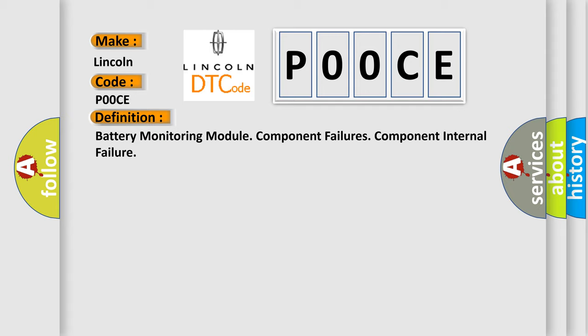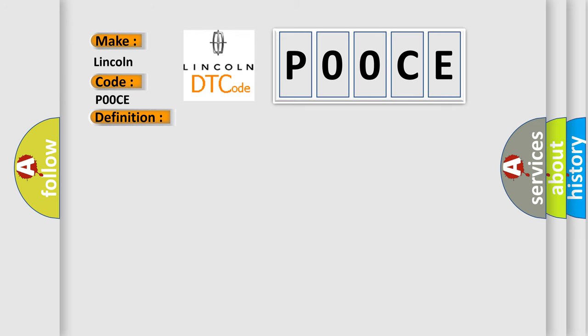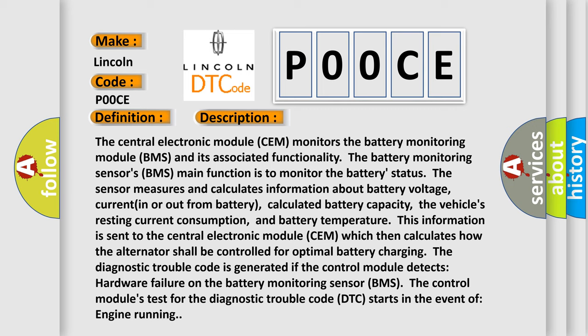The central electronic module SEM monitors the battery monitoring module BMS and its associated functionality. The battery monitoring sensor BMS main function is to monitor the battery status. The sensor measures and calculates battery voltage, current in or out from the battery, calculated battery capacity, the vehicle's resting current consumption, and battery temperature. This information is sent to the SEM, which calculates how the alternator shall be controlled for optimal battery charging. The DTC is generated if the control module detects a hardware failure on the battery monitoring sensor BMS, triggered when the engine is running.